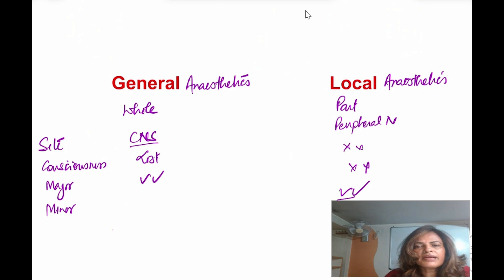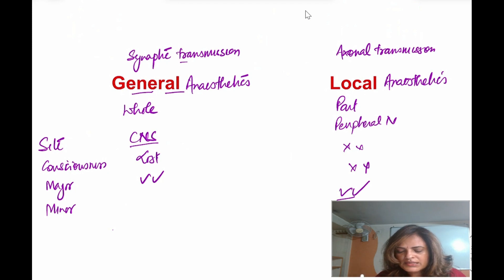Another important difference is the basic mechanism of action. Local anesthetics act by blocking the axonal transmission mainly, whereas general anesthetics appear to act by inhibiting the synaptic transmission. If you want a detailed mechanism of action on local anesthetic, you can watch my video. I will be giving a link in the description box.